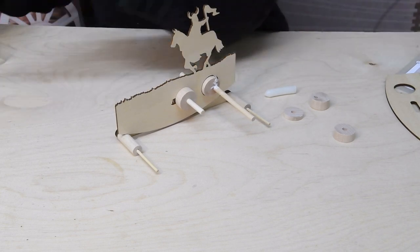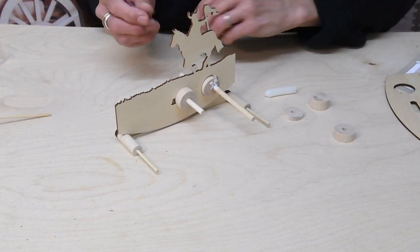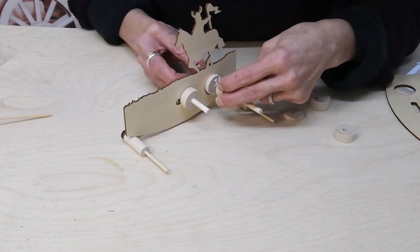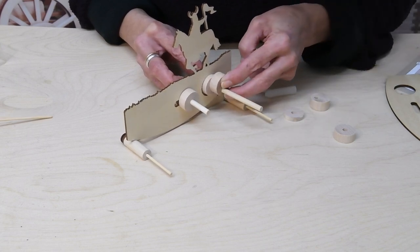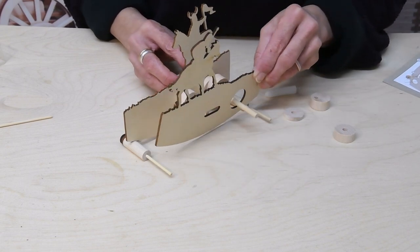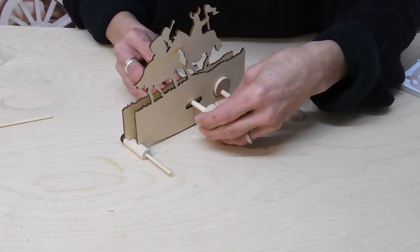The glue needs to go on the shaft as well as the cam. So the second cam goes on at a slight angle to the first one. Then we can put the second layer on and another spacer.